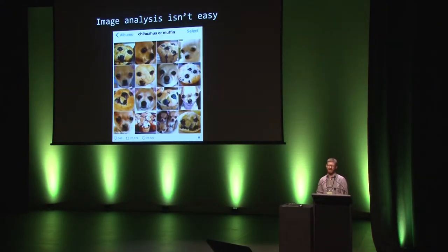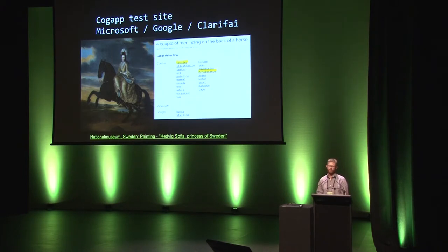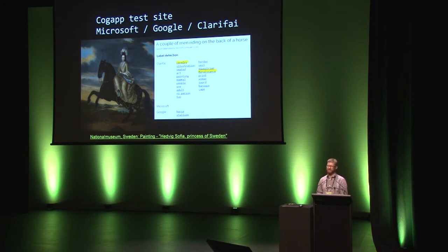Moving on to image analysis: some images are hard to decipher, even for people. Don't be surprised if your precious painting of a chihuahua gets tagged as a muffin. The UK web development company COG app have put together a site comparing three popular tools from Google, Microsoft and Clarify, providing a good comparison of their strengths and weaknesses. Here we have a painting of the Princess of Sweden, and Clarify has added tags including Renaissance and Cavalry. Now the Renaissance Cavalry weren't very effective, but they had the best uniforms.